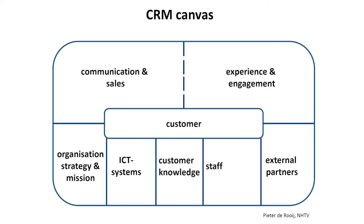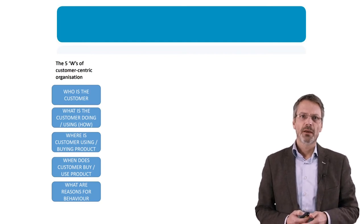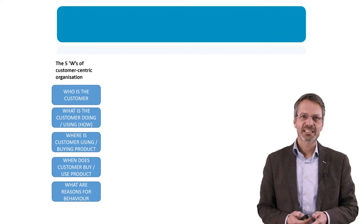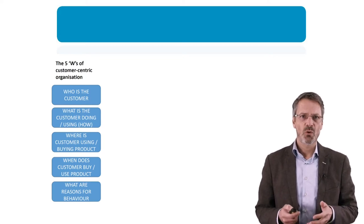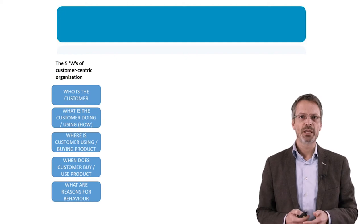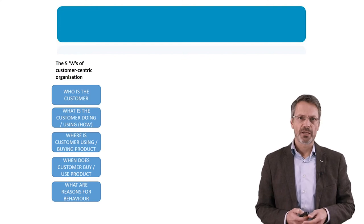Customer knowledge is partly related to ICT systems but not only to ICT systems. When thinking about customer knowledge, it's important to consider the five W's — an idea of Pieter Verhoef, professor in Groningen, who wrote a book in 2016 referring to the five W's of the customer-centric organisation: who's the customer, what's he doing, where is he using your product, when is he buying or using your product, and why — what are his reasons for behaviour.